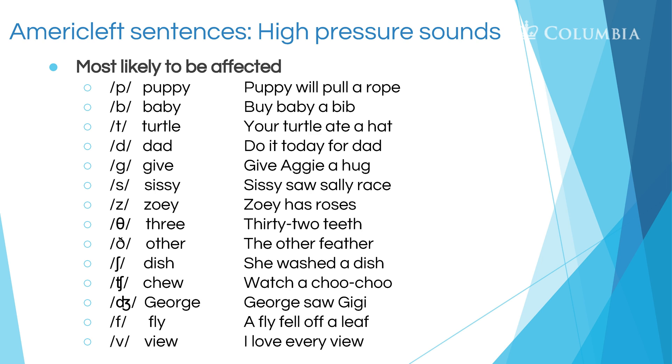For t: 'turtle' — 'Your turtle ate a hat.' For d: 'dad' — 'Do it today for dad.' For g: 'give' — 'Give Aggie a hug.' For s: 'sissy' — 'Sissy saw Sally race.' I listen for the sound on its own — have the child repeat 'sss,' then go to 'sissy,' then 'Sissy saw Sally race.' I'm looking for placement, looking for manner — is it a continuant? Is there turbulence? Are things coming out the nose when they should all be coming out the mouth? And that's what I'm doing for each one.